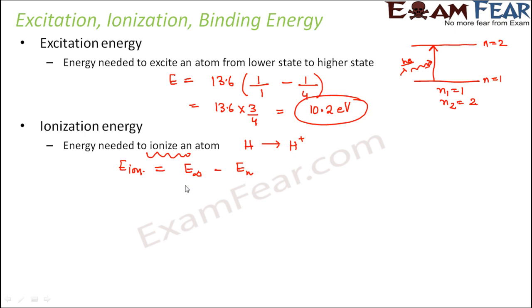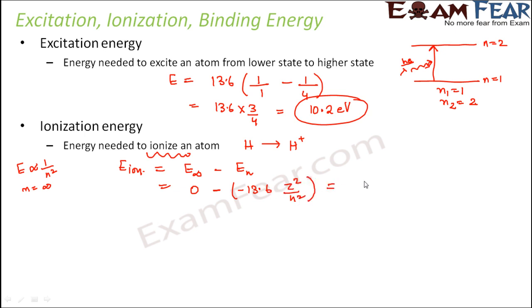Since energy is inversely proportional to n², for the infinite orbit n equals infinity, so 1/infinity equals 0, meaning energy at the infinite orbit is 0. Therefore, ionization energy equals 0 minus (−13.6 Z²/n²), which gives 13.6 Z²/n² electron volts for a hydrogen-like atom.